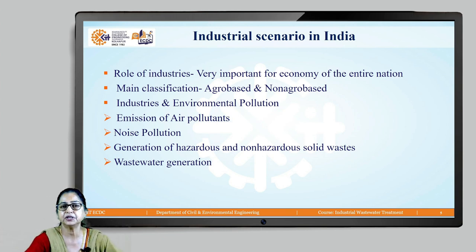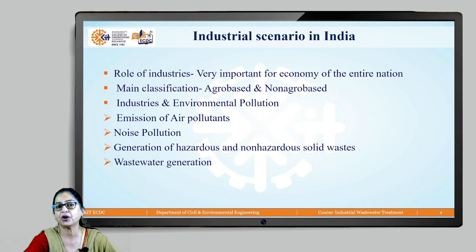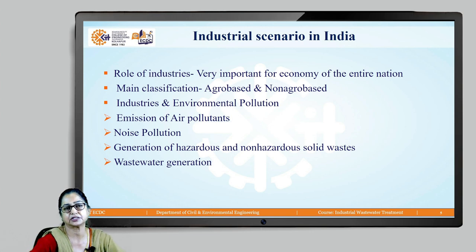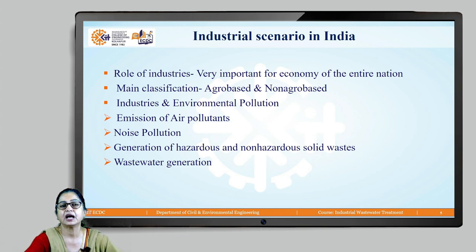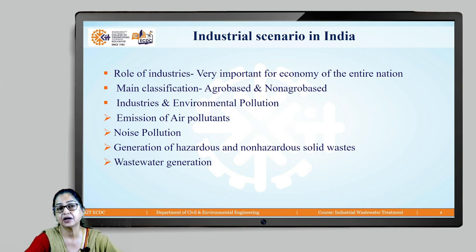Looking at the industrial scenario in India: industry plays a very vital role in the economy of any country. Industrial production output decides the economic status of the country — China is number one because of its highest output. We can classify industry into two broad categories: agro-based and non-agro-based. Irrespective of this classification, industries are associated with environmental pollution, and the scale of that pollution is much larger compared to the automobile or domestic sectors.